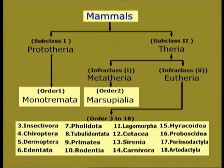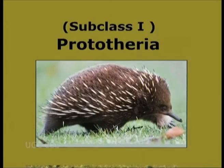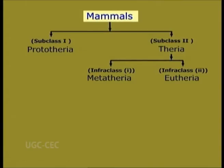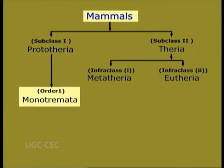Subclass 1: Prototheria. Protos meaning first, Therios meaning beast. They are highly primitive and reptile-like. They are the only egg-laying mammals, that is why oviparous animals. This class is comprised of only one order, Monotremata.